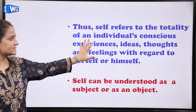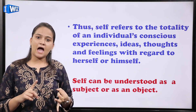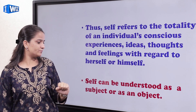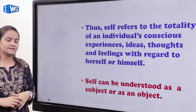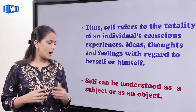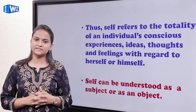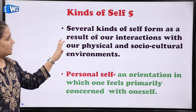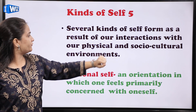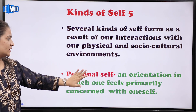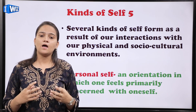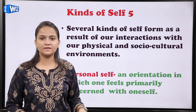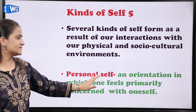तो आपका self क्या है? It's a compilation of your personal identity and your social identity. It includes your experiences, ideas, thoughts and feelings. Self को आप as a subject भी देख सकते हो या as an object — subject कब? जब आप खुद कुछ कर रहे हैं; और object कब? जब आपके साथ कुछ हो रहा है। Several kinds of self form as a result of our interactions with our physical and socio-cultural environments।